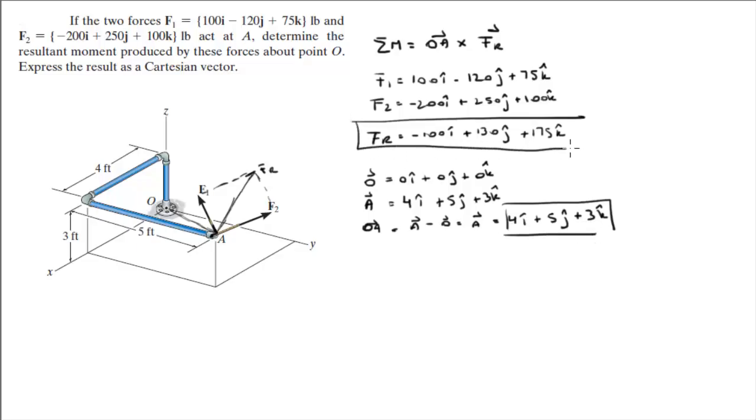So now you have your two vectors for your cross product. We're going to do the cross product. The moment at O equals, you draw your matrix: i, j, k. The first one is OA, so it's 4, 5, 3. The second one is FR, so it's negative 100, 130, and 175.